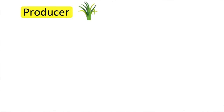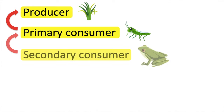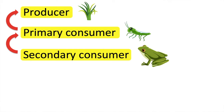So, we begin with the producers. The primary consumers are the animals that eat the plants. The secondary consumers are the animals that eat the primary consumers. The tertiary consumers are the animals that eat the secondary consumers.